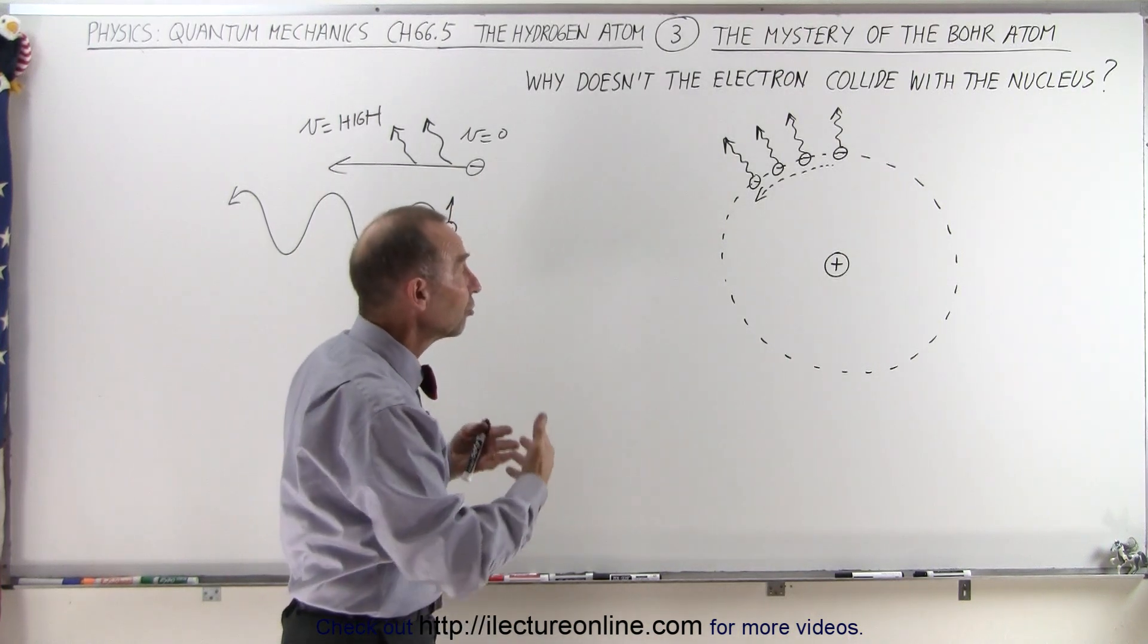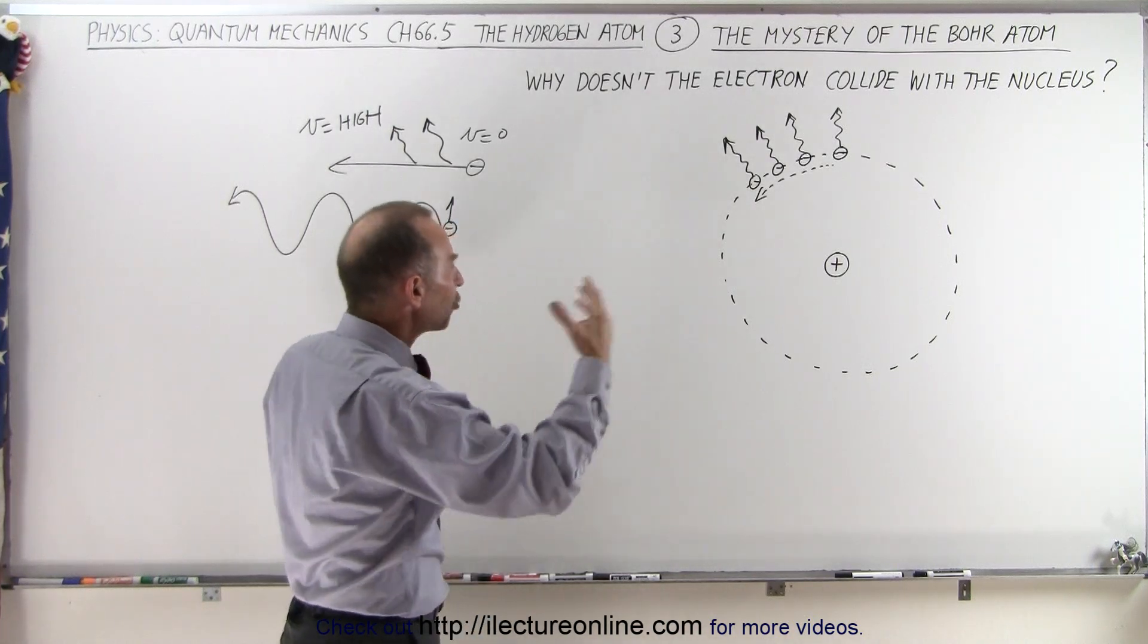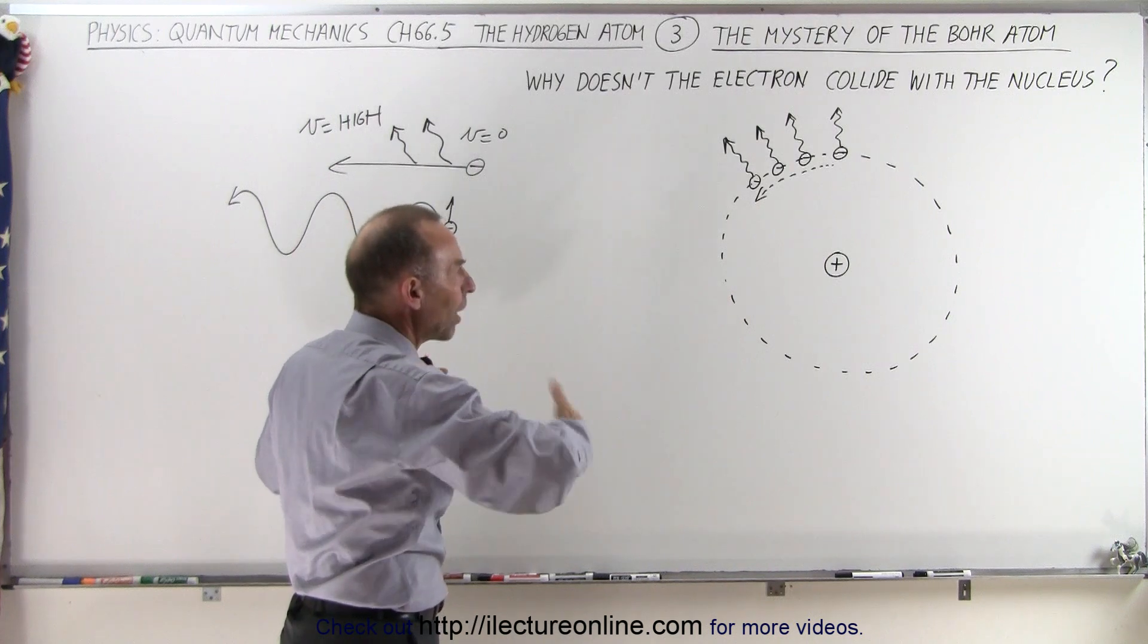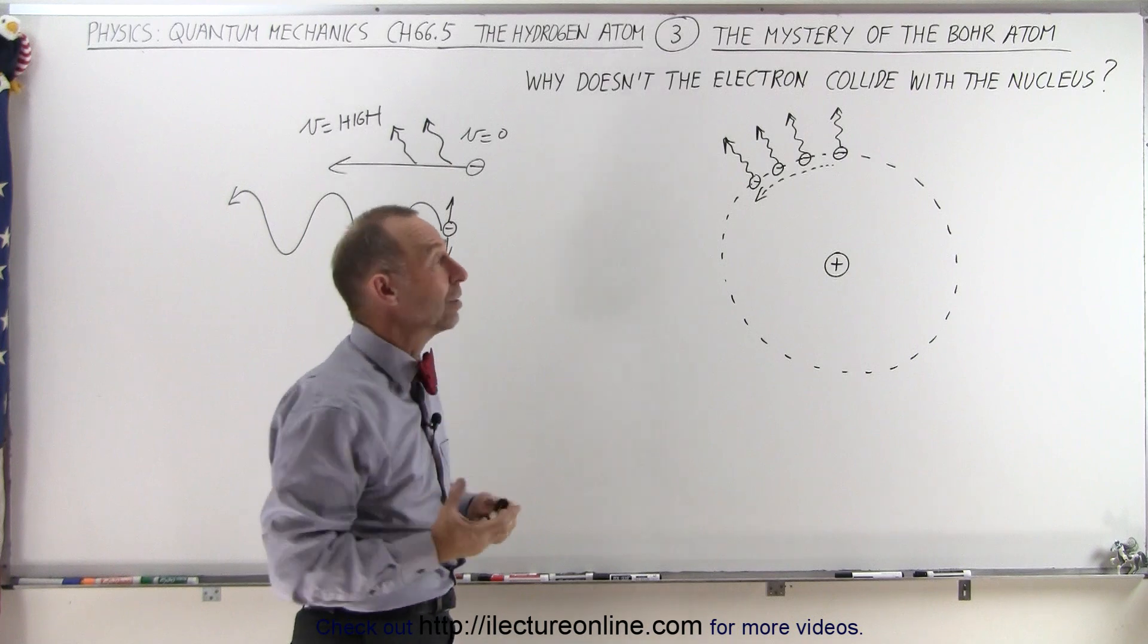In this case it's called centripetal acceleration. So from what we knew from classical mechanics, any charged particle that goes around the nucleus at a very high speed like that in a circular path should be radiating energy.